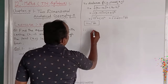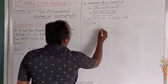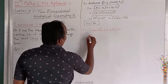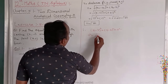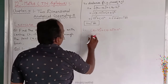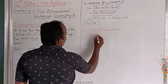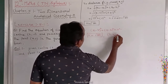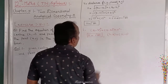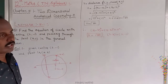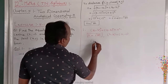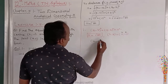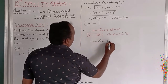Now using the circle formula (x - h)² + (y - k)² = r², where r² = 50 and the center (h, k) = (2, -1), we substitute: (x - 2)² + (y + 1)² = 50.